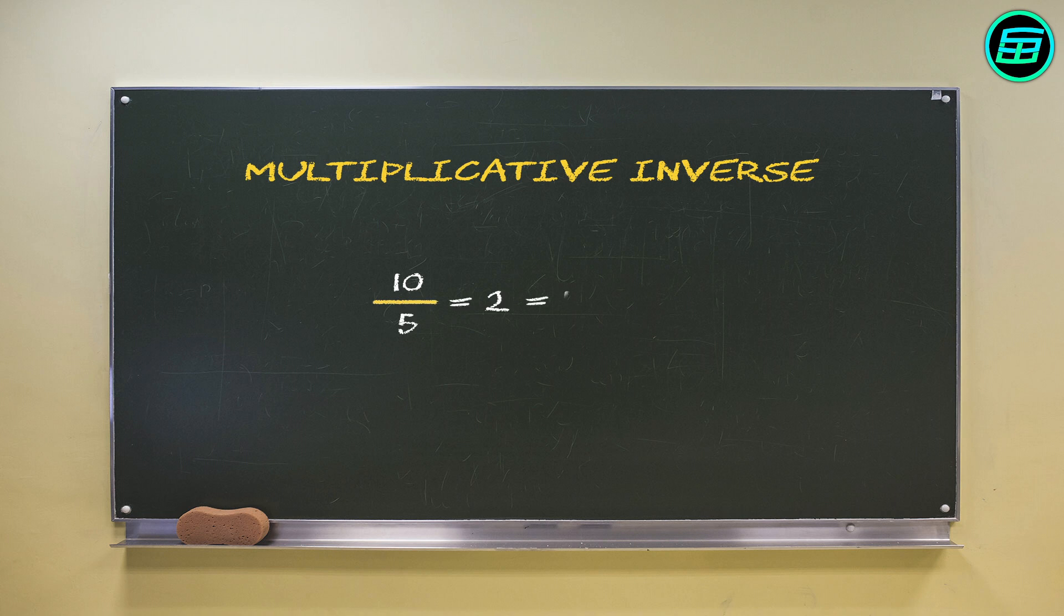In math, division and multiplication are the inverse of each other. If we put the results of division and multiplication operations equal to each other, the concept of multiplicative inverse arises.